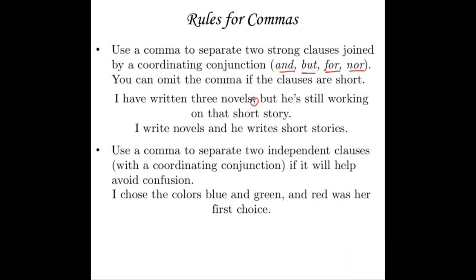Use a comma to separate two independent clauses with a coordinating conjunction if it will help avoid confusion. An independent clause has a subject and a verb and could be a sentence by itself. For example: "I chose the colors blue and green, and red was her first choice." Without the comma, it reads as though I chose blue, green, and red — then suddenly we're talking about her choice. The comma tells the reader to pause so the meaning is clear.